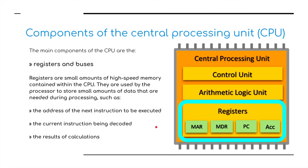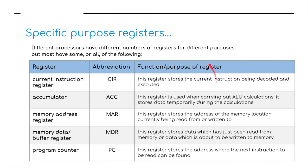And finally, the registers. We've got these four registers — the MAR, the memory address register; the MDR, the memory data or buffer register; the CIR, the current instruction register; and the ACC, the accumulator; plus the program counter. These are small amounts of high-speed memory contained within the CPU, used by the processor to store small amounts of data needed during processing, such as the address of the next instruction to be executed, the current instruction being decoded, and the results of calculations.